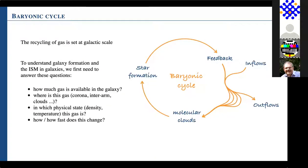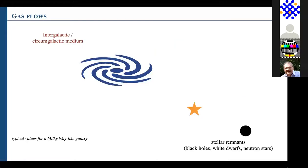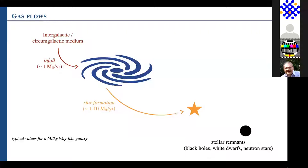The recycling of gas — the ingredient for star formation — is really set at the galactic scale. To understand galaxy formation and the ISM we need to answer some basic but fundamental questions: how much gas is available in the galaxy, where is this gas — in the corona, circumgalactic medium, between spiral arms, in clouds — in what physical state is the gas, and how fast does that physical state change with time. For a Milky Way-like galaxy, the infall of gas into the disk is something like one solar mass per year.